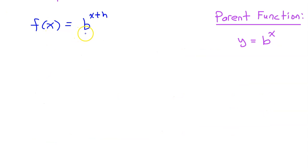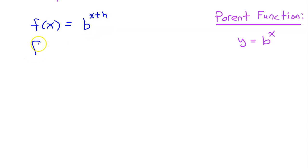Every horizontal translation of an exponential function can be rewritten as a vertical dilation. Because if we have f of x equals b to the x plus h, we can always rewrite this as f of x equals b to the x times b to the h.